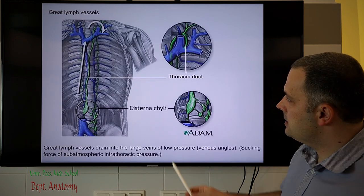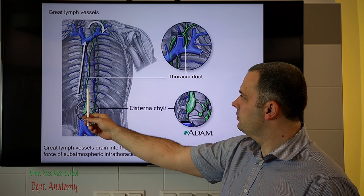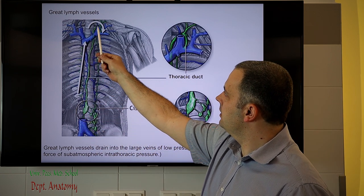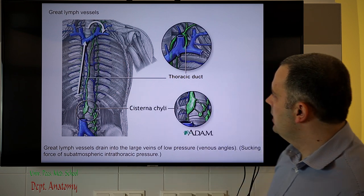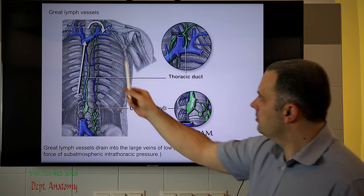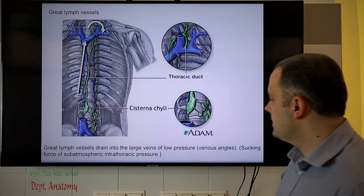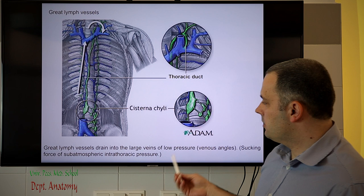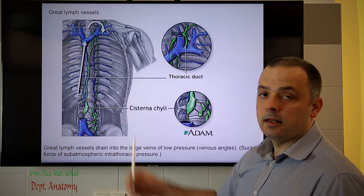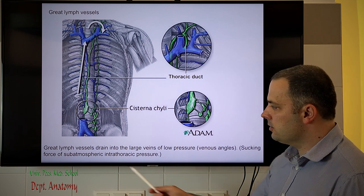The thoracic duct travels upward in front of the vertebral column and finally drains into the left venous angle, formed by the internal jugular vein and subclavian vein on the left side, where pressure circumstances are favorable and the lymph fluid can return to the venous circulation due to the low pressure.